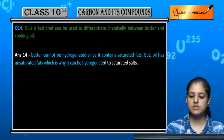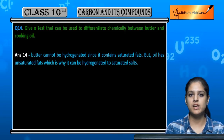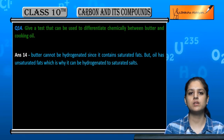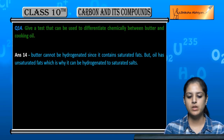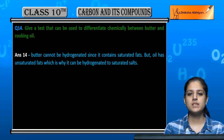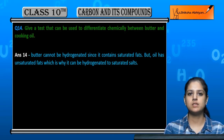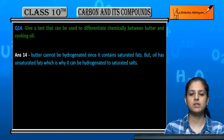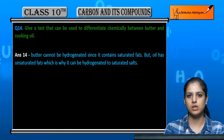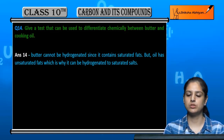Cooking oil, on the other hand, contains unsaturated fats, which is why hydrogenation can occur — converting them to saturated fats. This difference allows us to differentiate between butter and cooking oil: butter does not undergo hydrogenation, while cooking oil does.